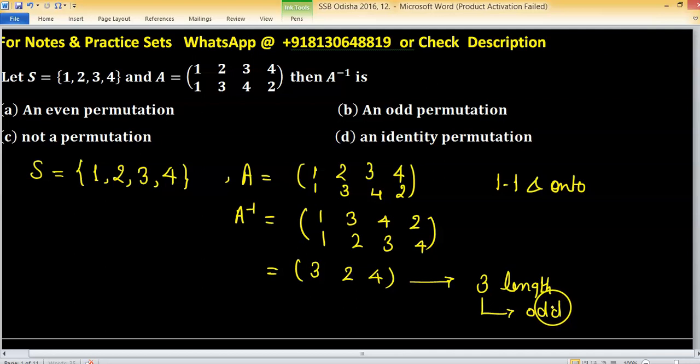Odd length cycles, we know a result, all are even permutations. So option A is correct.